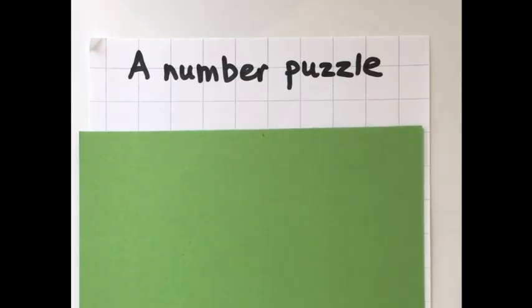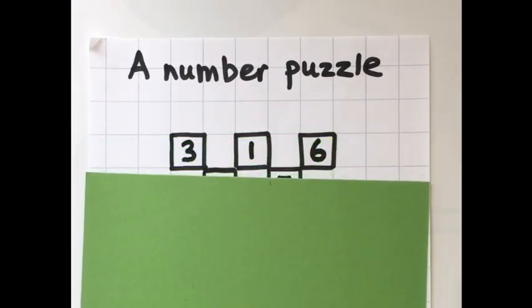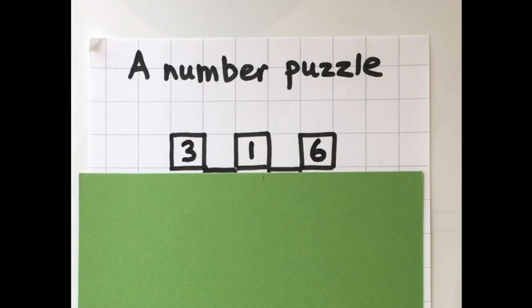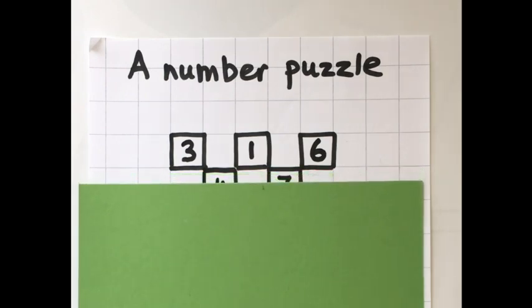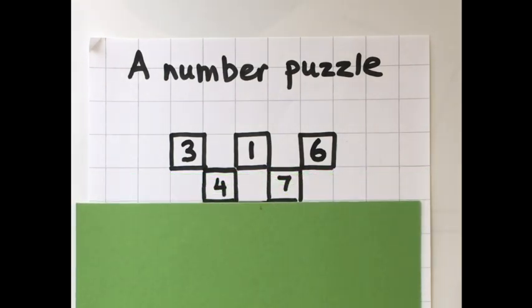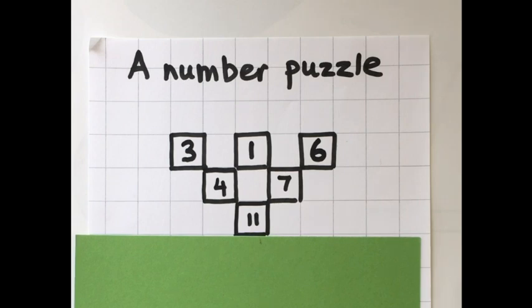I'm going to choose three numbers and then I'm going to do something with those numbers to get the two numbers below, and I'm going to do the same thing with those two numbers to get an answer of 11.